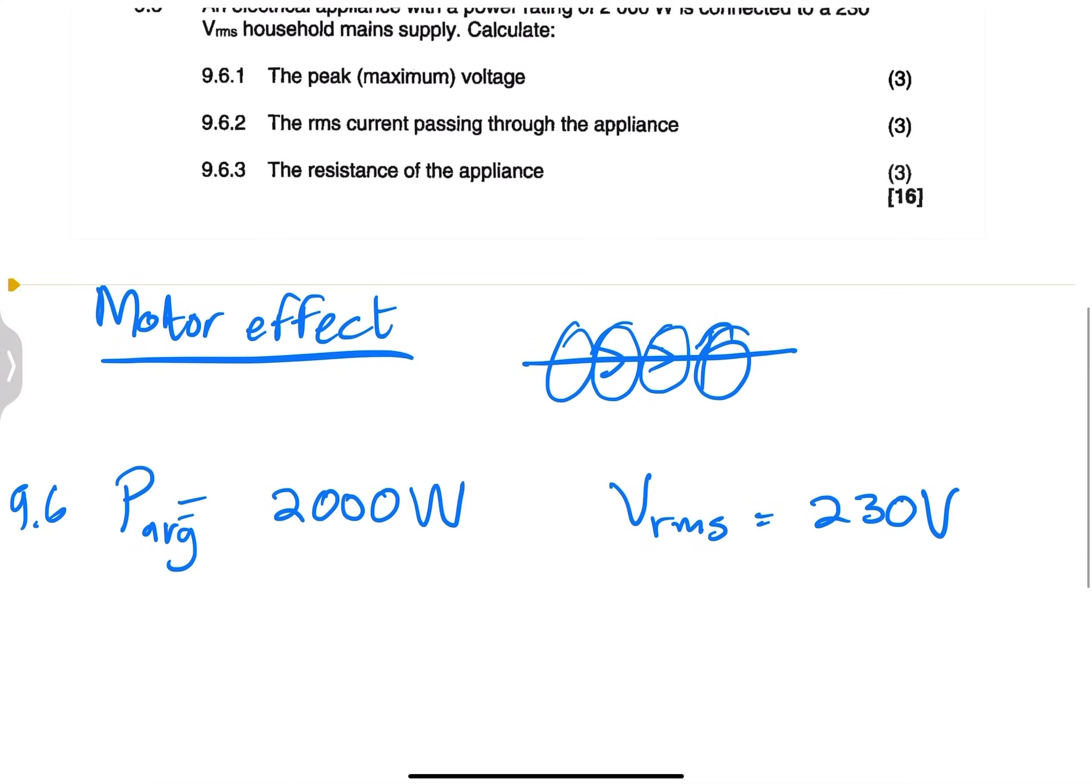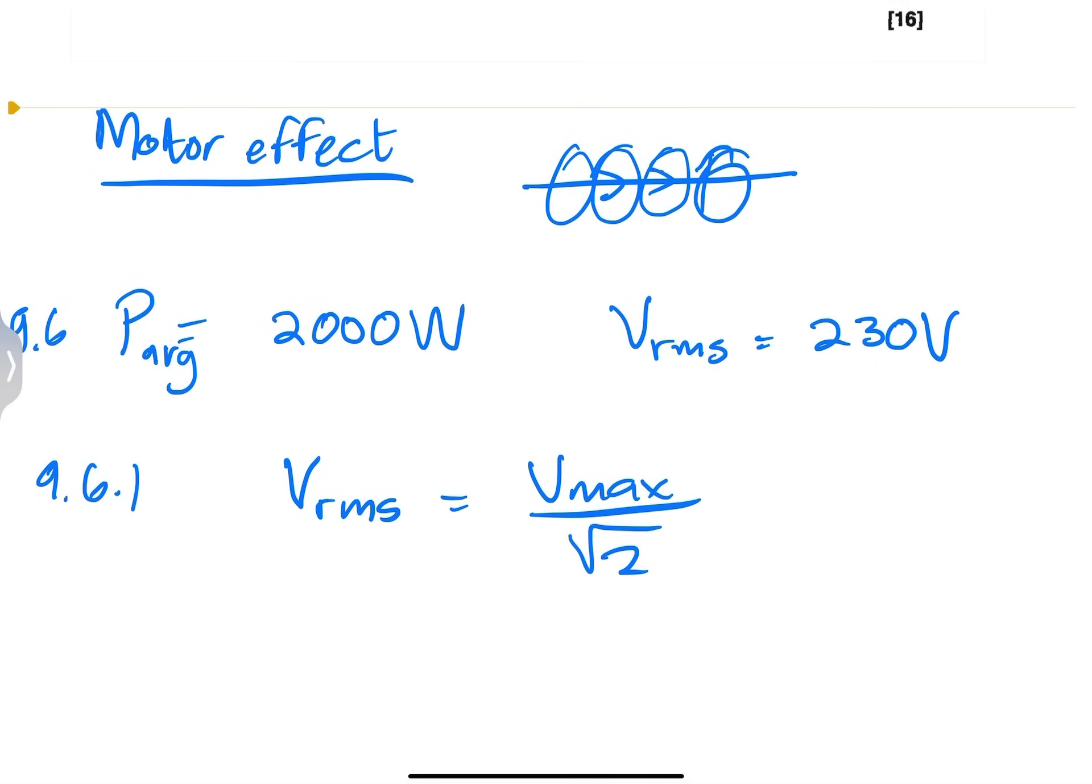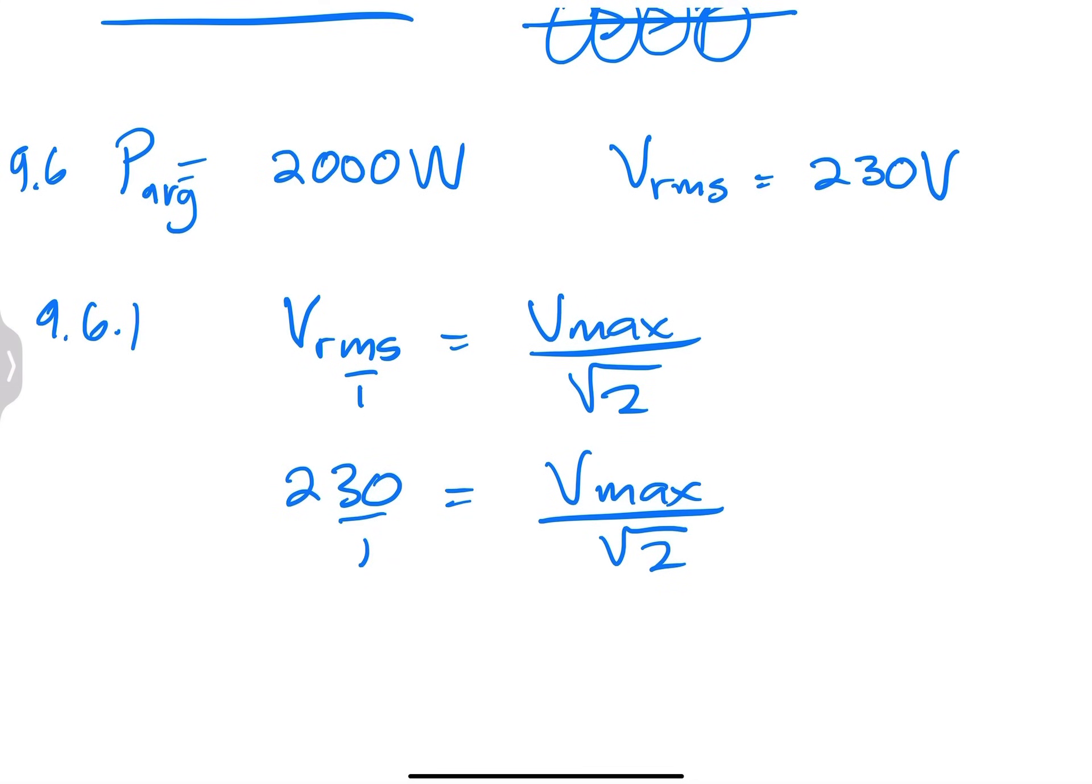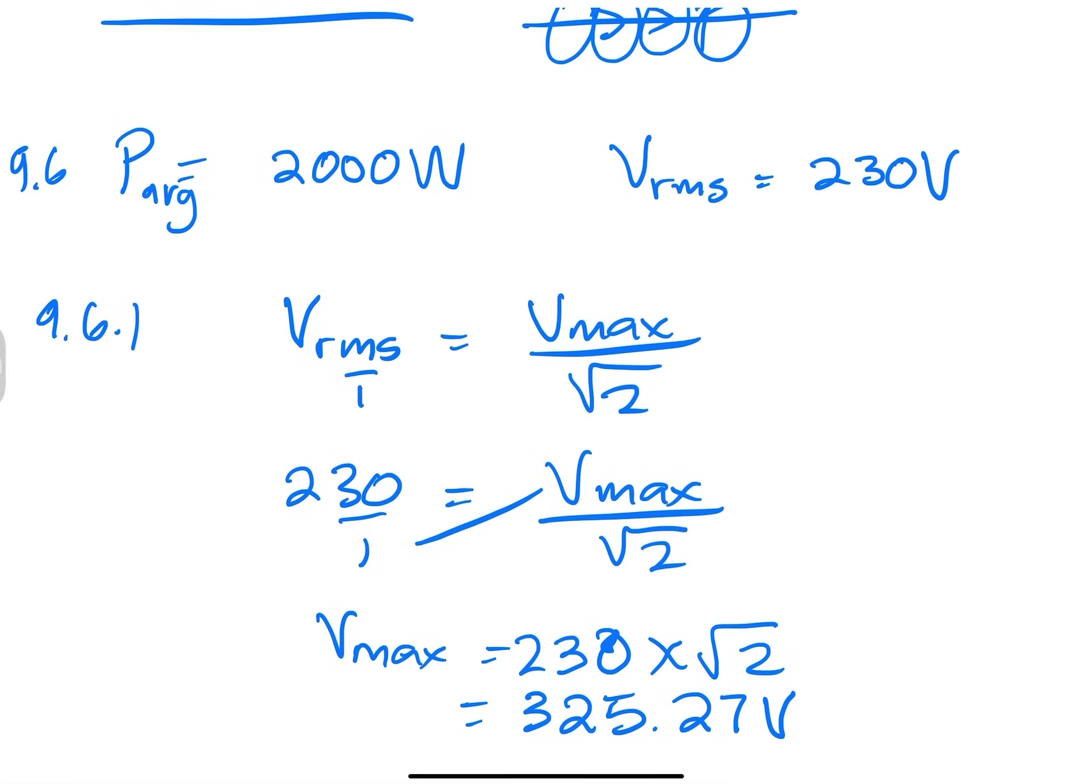So first of all, they want us to calculate the peak or maximum voltage. So remember, we know that 9.6.1. So we know that V_RMS is equal to V_max, the maximum voltage divided by the square root of 2. So what it means is that now I want V_max. My V_RMS value is 230, V_max divided by root 2. So obviously, what will I do? I cross multiply to get V_max. So V_max would be equal to 230 times root 2. So that's 230 multiplied by the square root of 2. And that would simply give us 325.27 volts. That's my peak voltage.